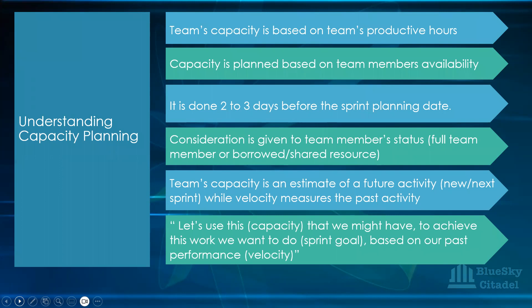The team's capacity is based on an estimate of a future activity. You don't plan capacity for a sprint you're doing right now — any capacity plan you do is for a future sprint, the next sprint. Velocity, on the other hand, measures past activity. We'll see how we're able to relate them together as we go along.